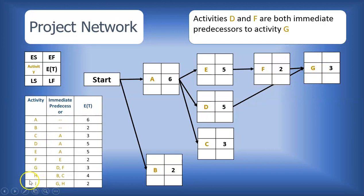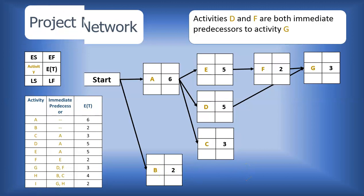Next, we have activity H, and it has two predecessors, activities B and C. So that means we will have one arrow coming from activity C and another coming from activity B, and both arrows will be going to activity H.